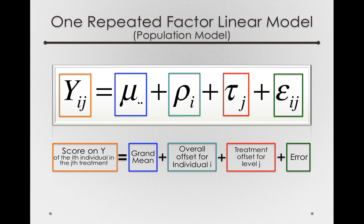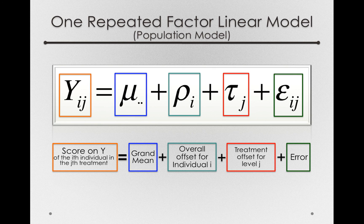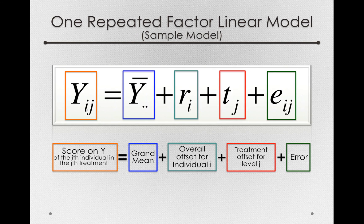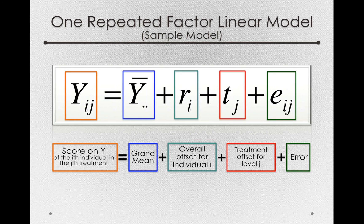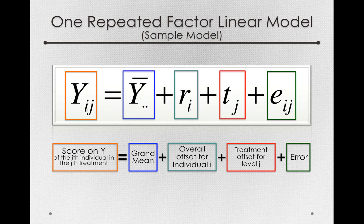Now, we'll come back to that error in just a second when we look at this in a diagram. But let's look first at our one repeated factor linear model in a sample. Now, just like we've done before, we won't use Greek letters. Instead, we'll substitute the Roman characters. So, this reads off as the y_ij's are equal to the y bar dot dot, the grand mean in our sample, plus the r_i's, the overall offset for individual i, plus the t_j's, the treatment offsets for level j of our factor, plus e_ij.